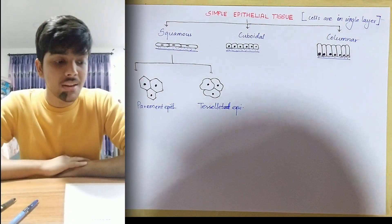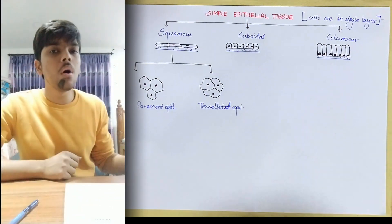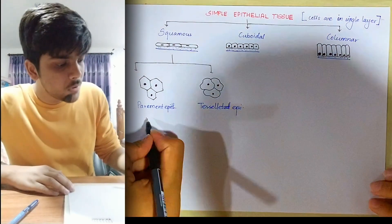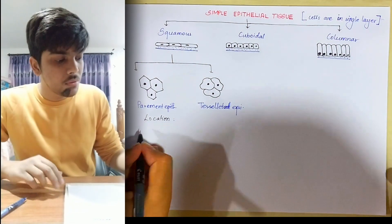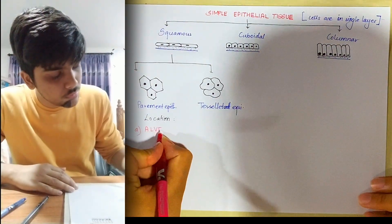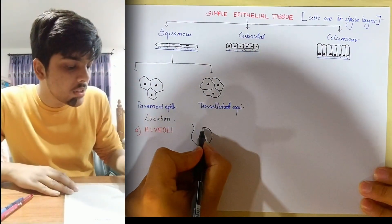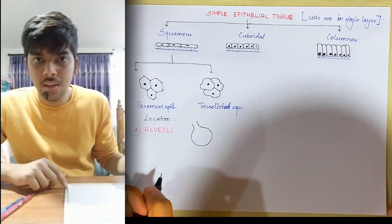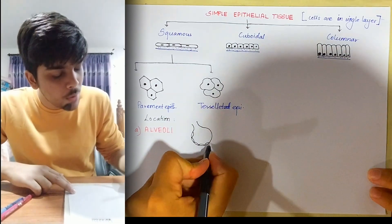Those are the major categories of simple epithelial tissue. Now I'll be showing you the places where simple squamous epithelium is present and what their role is in those places. Location A — A for alveoli. Alveoli are the basic functional unit of your lungs, also known as air sacs, where gaseous exchange takes place. The wall of the alveoli is lined by simple squamous epithelium.